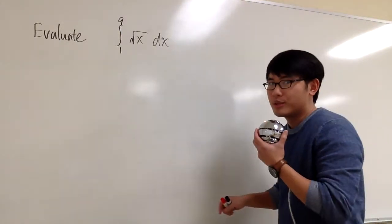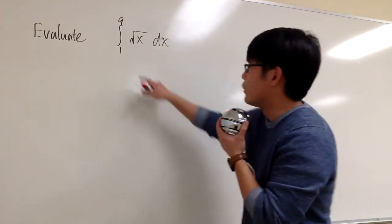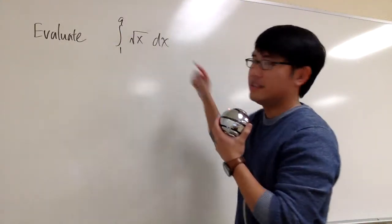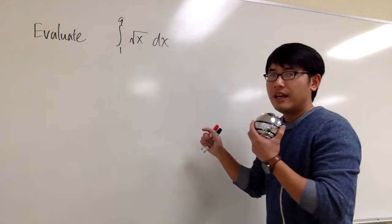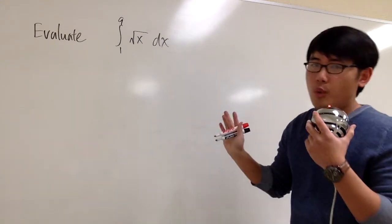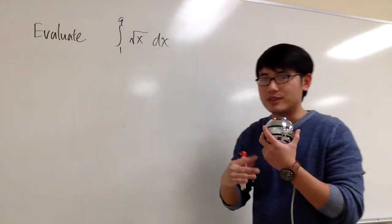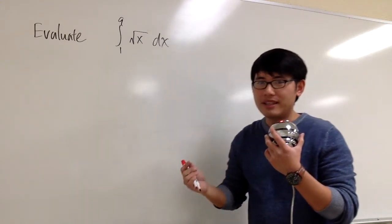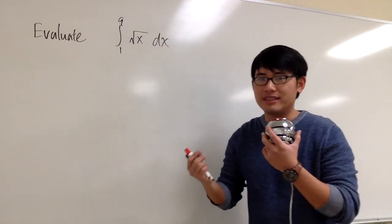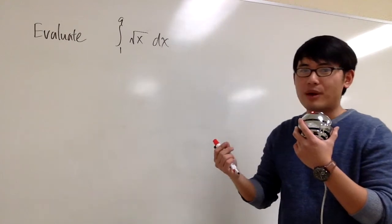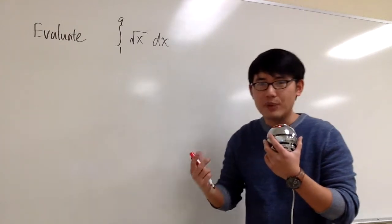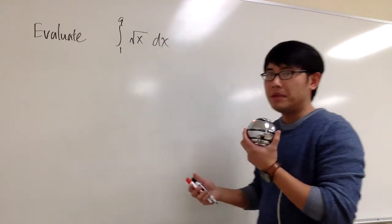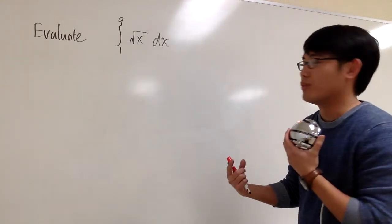Let's evaluate this integral, the integral from 1 to 9 of square root of x dx. Whenever you are dealing with a square root in calculus, most likely we should write this as to the 1/2 power, because that way we can use the power rule or the reverse power rule.